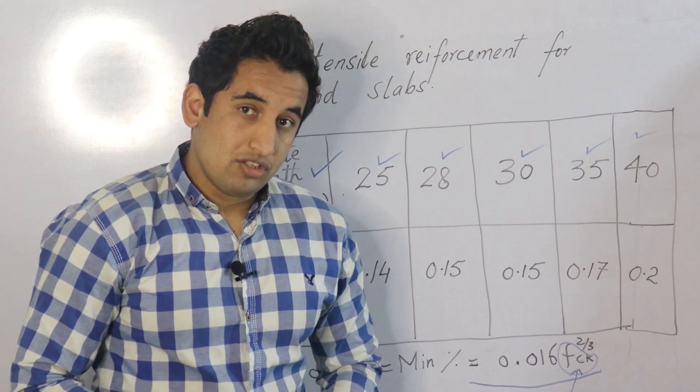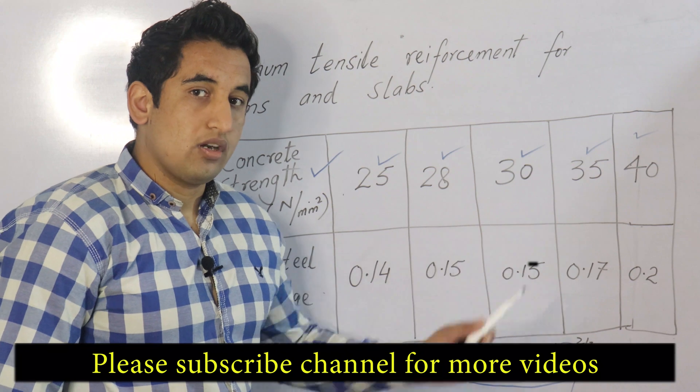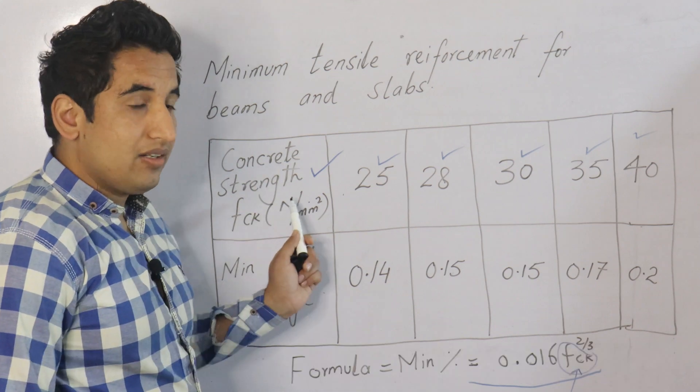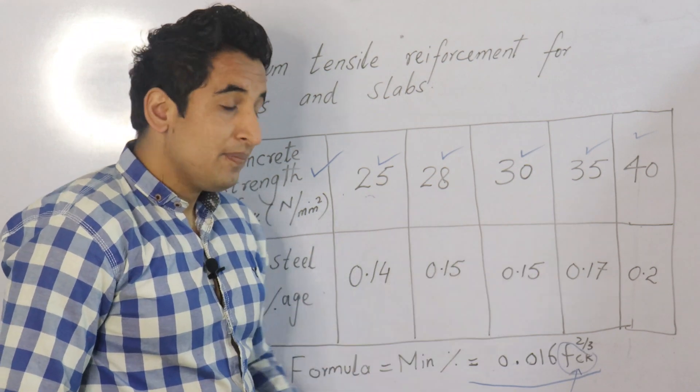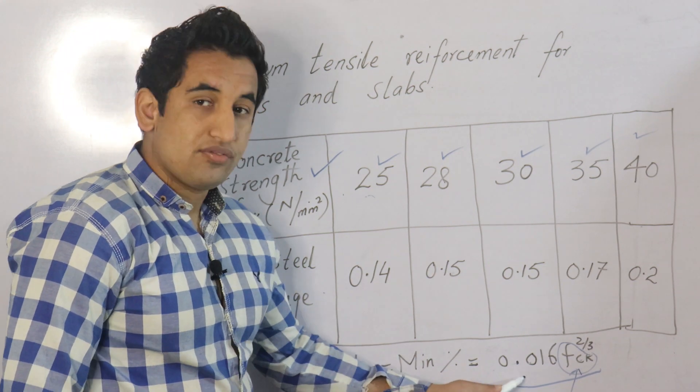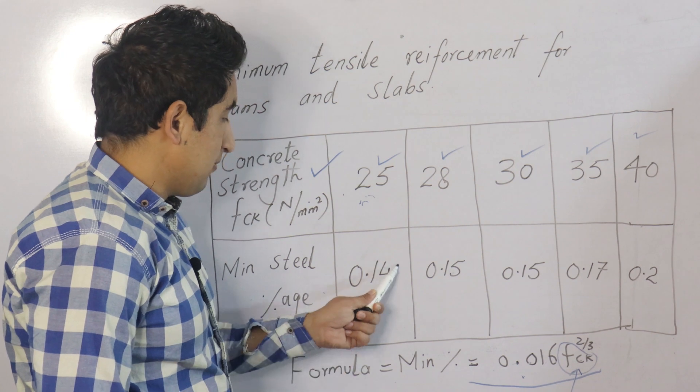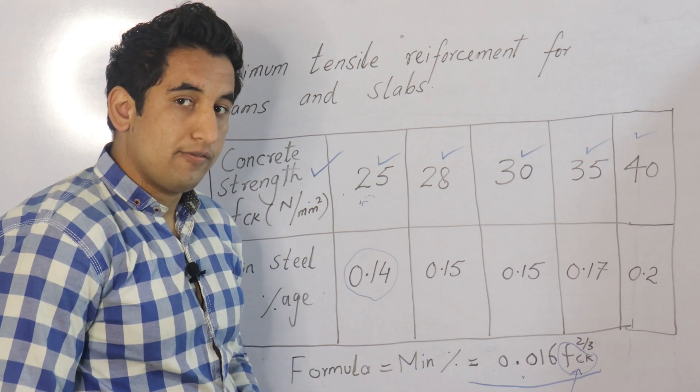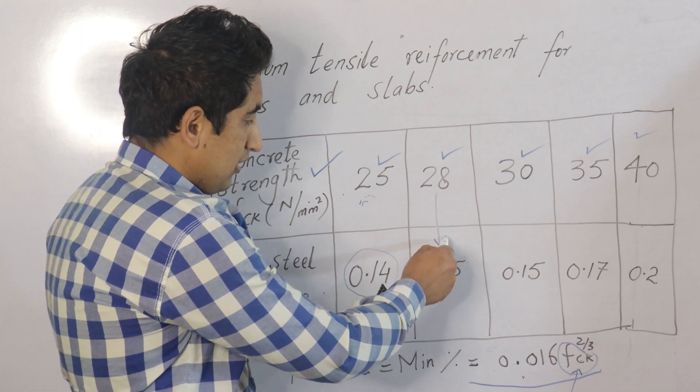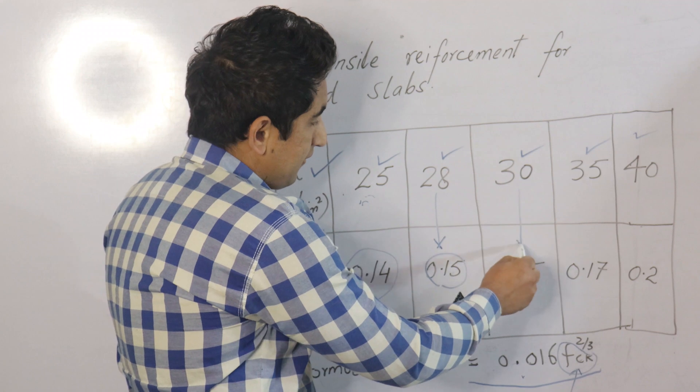I have calculated the minimum percentage of steel for different grades of concrete. As you can see, in the first line I have mentioned the concrete grades that range from 25 to 40, and in the second one I have calculated the minimum percentage of steel by using this formula. For 25 grade of concrete, the required minimum percentage of steel is 0.14 percent. Similarly, we can also calculate for 28 grade of concrete that comes as 0.15 percent, and similarly for 30 grade of concrete it comes as 0.15 percent.